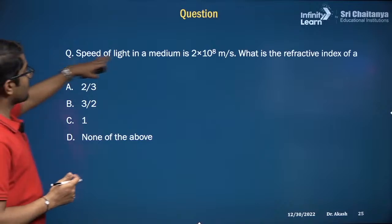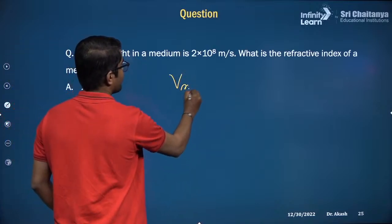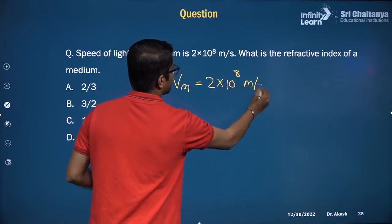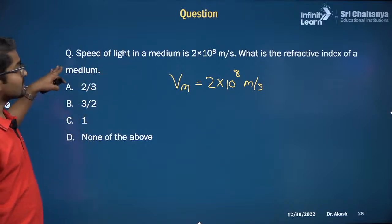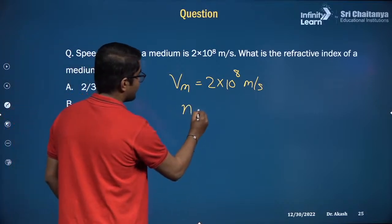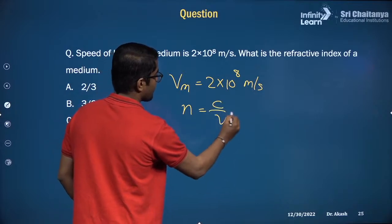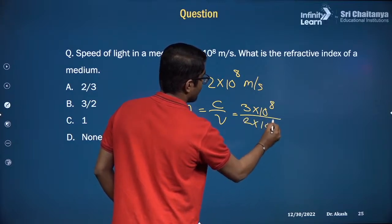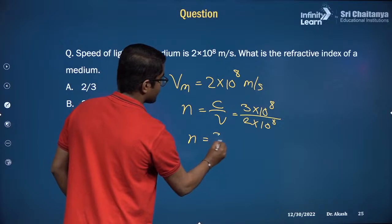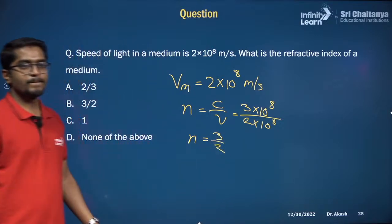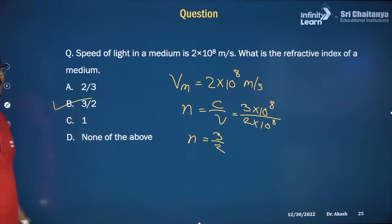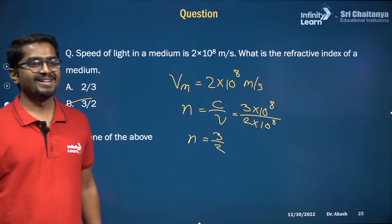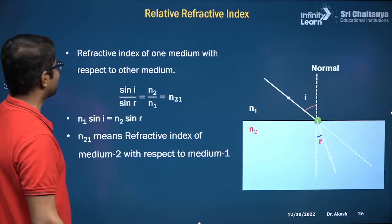Question: the speed of light in a medium is 2 × 10⁸ m/s. What is the refractive index? N = C/V = (3 × 10⁸) / (2 × 10⁸) = 3/2. So the refractive index is 1.5, which is option B.